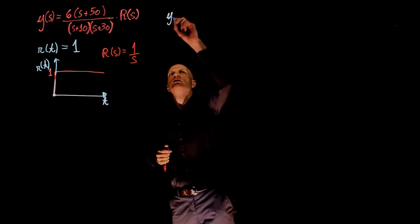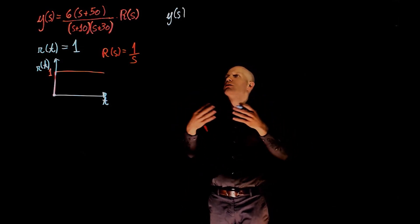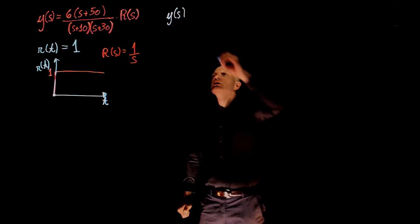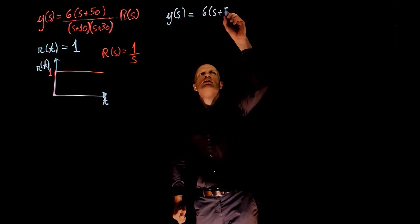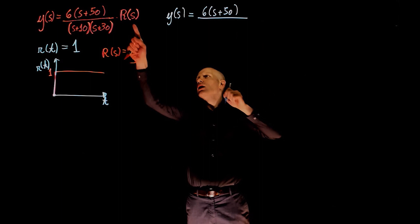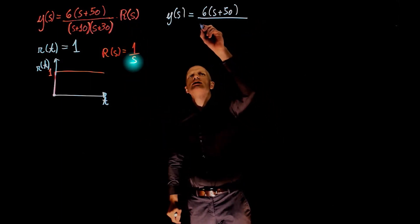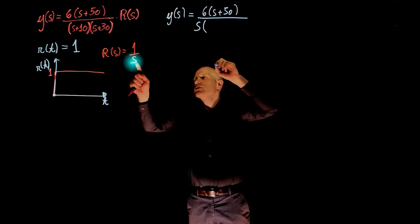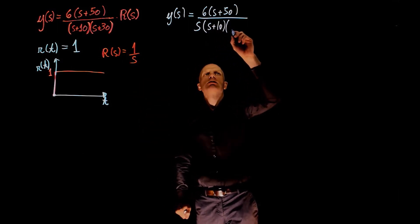y of s, which again is the frequency response of the printer position, is 6 times s plus 50 divided by R. If we multiply this by R is 1 over s, so we have s that comes from here times s plus 10, s plus 30.